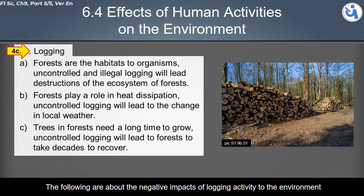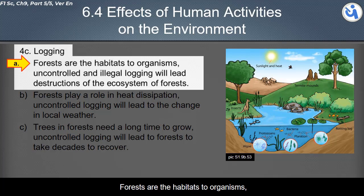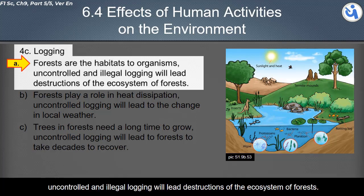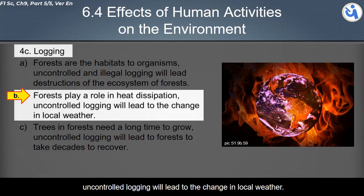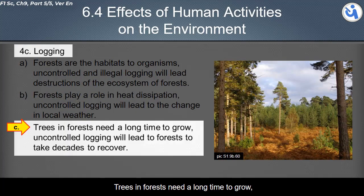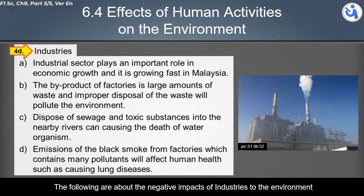About the negative impacts of logging: forests are habitats for organisms. Uncontrolled and illegal logging leads to the destruction of forest ecosystems. Forests play a role in heat dissipation, so uncontrolled logging leads to changes in local weather. Trees and forests take a long time to grow, and uncontrolled logging means forests will take decades to recover.